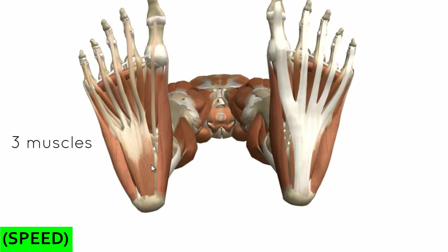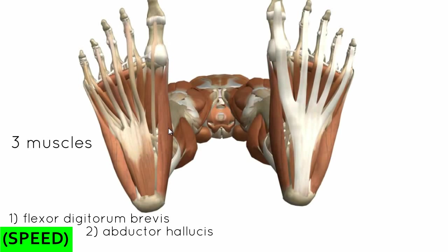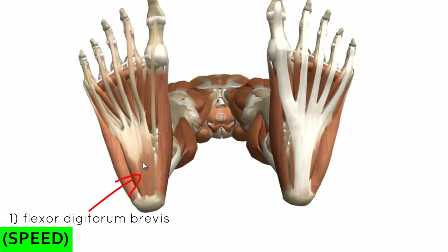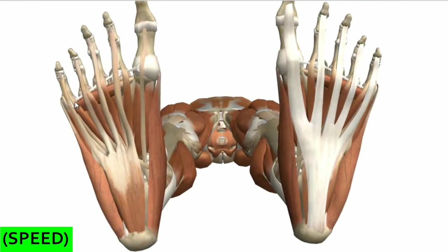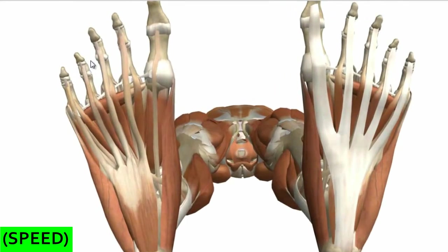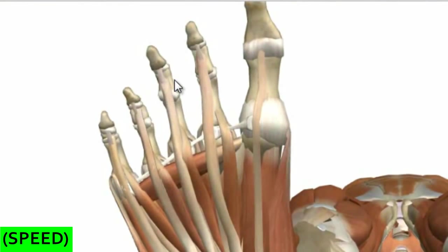I'll start with the central muscle. There are three muscles in this first group: the flexor digitorum brevis, the abductor hallucis, and the abductor digiti minimi. Right in the middle, we've got the flexor digitorum brevis muscle. This originates on the medial process of the calcaneus, and it forms four tendons which insert onto the middle phalanges of the lateral four digits.